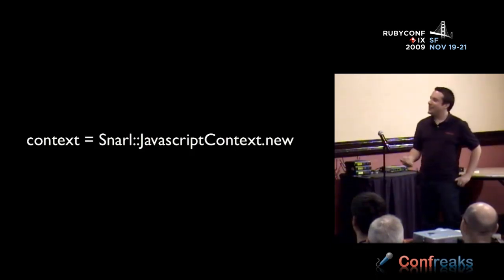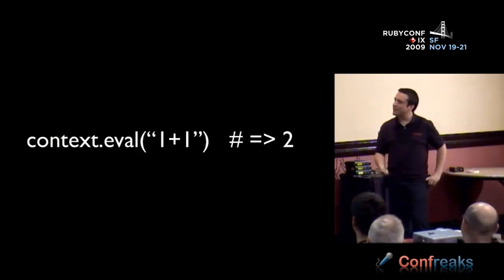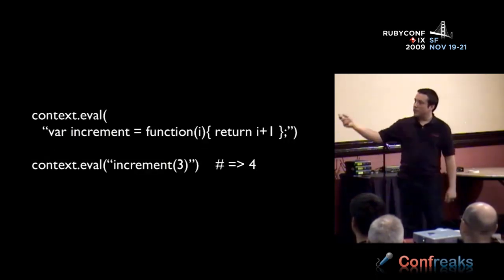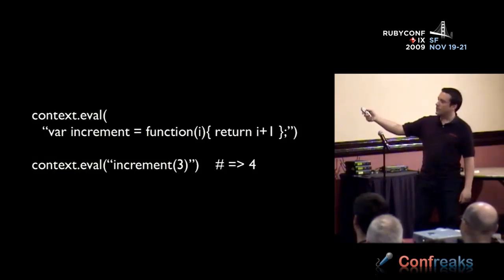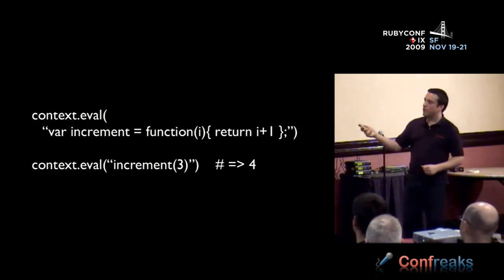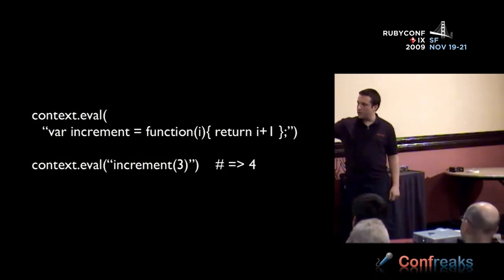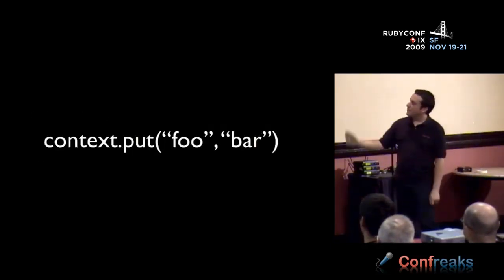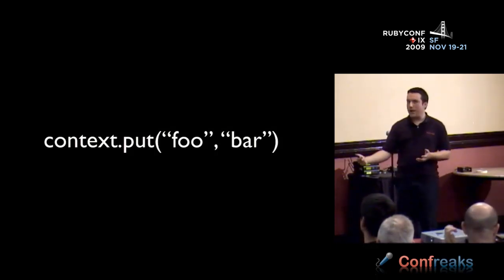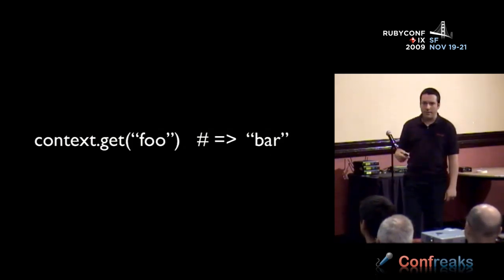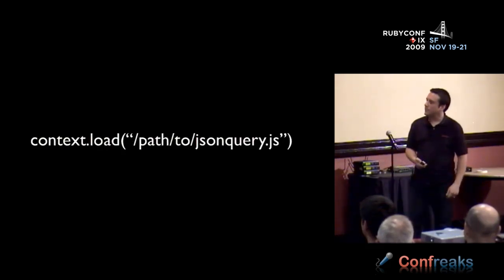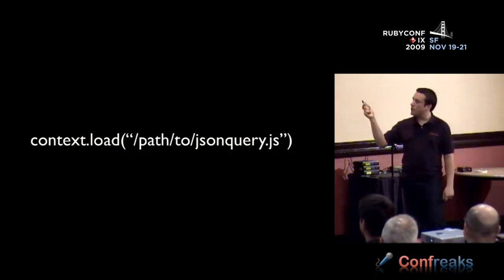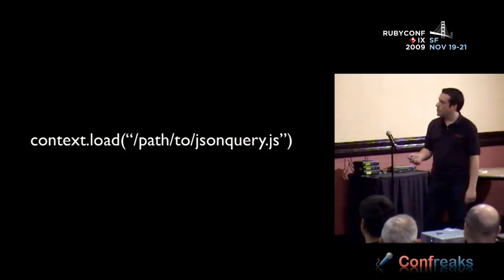The context you create in Ruby is called a Snarl JavaScript context. You just create a new one of those, and from here on out you can play with it like it was a browser session. You can call context.evaluate with 'one plus one in JavaScript' — that returns true in Ruby land. In JavaScript you can assign functions to variables, so here's a simple function to increment whatever number you pass in. Because you're doing this in the same context, later on you can call increment and pass in a number — it comes out to four. You can also think of this context as your global scope — put foo, set the value equal to bar, then get foo and it returns bar. You can also load a whole JavaScript library just by calling the load function.